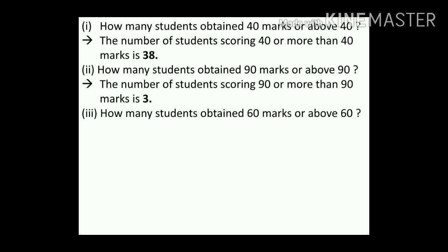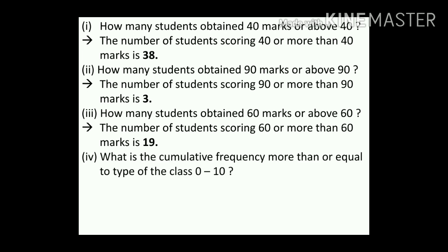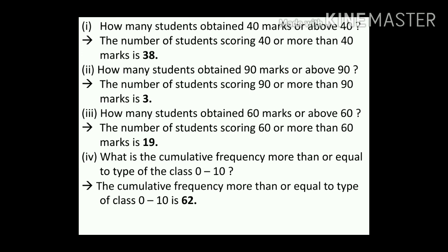Question 3: How many students obtained 60 marks or above? The cumulative frequency for class 60–70 is 19 students. Question 4: What is the more-than-or-equal-to type cumulative frequency of class 0–10? Since all 62 students score 0 or above, the answer is 62.